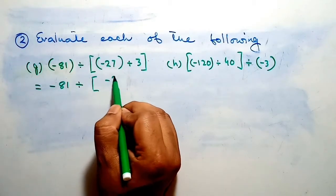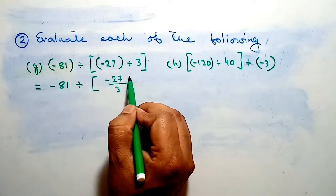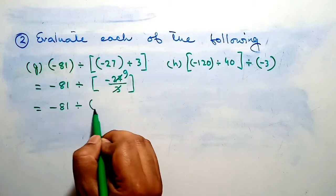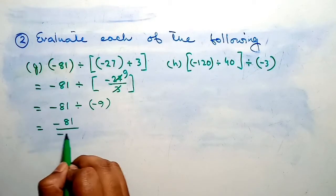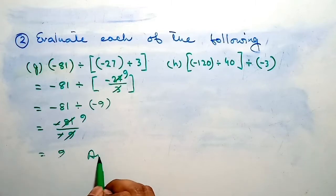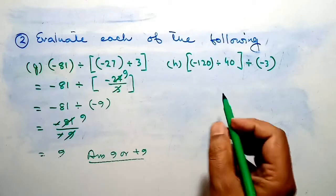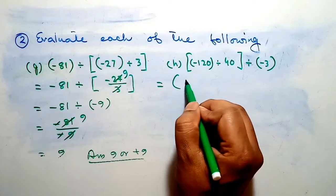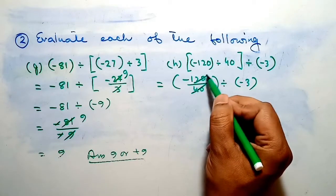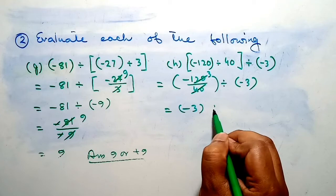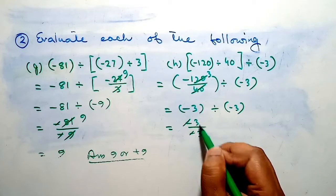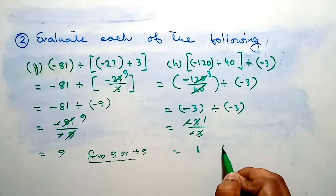Minus 81 divided: here we write minus 27 by 3. 3 nines are 27, so therefore minus 81 divided by minus 9. Finally minus 81 divided by minus 9 — this minus and this minus cancel. 9 nines are 81, so our answer is positive 9. We can write our answer as 9 or positive 9. Question H: here we divide minus 120 by 40, and write minus 3. 4 threes are 12, therefore minus 3.